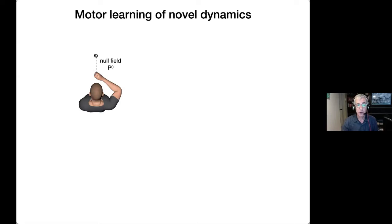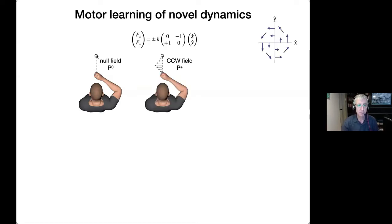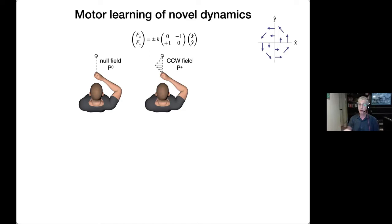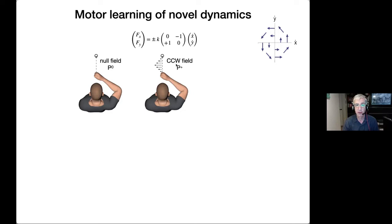We first let subjects make a movement with the robot turned off — we call that P0, a no-perturbation condition. We can then apply a perturbation: a typical one is where the force in the x and y direction is some gain times a matrix times the x and y velocity. If you plot out the forces as a function of velocity, if you don't move you get no force; the faster you move, the bigger the force, scaling linearly. The force always acts at right angles to your direction of motion — we call this a counterclockwise viscous curl field.